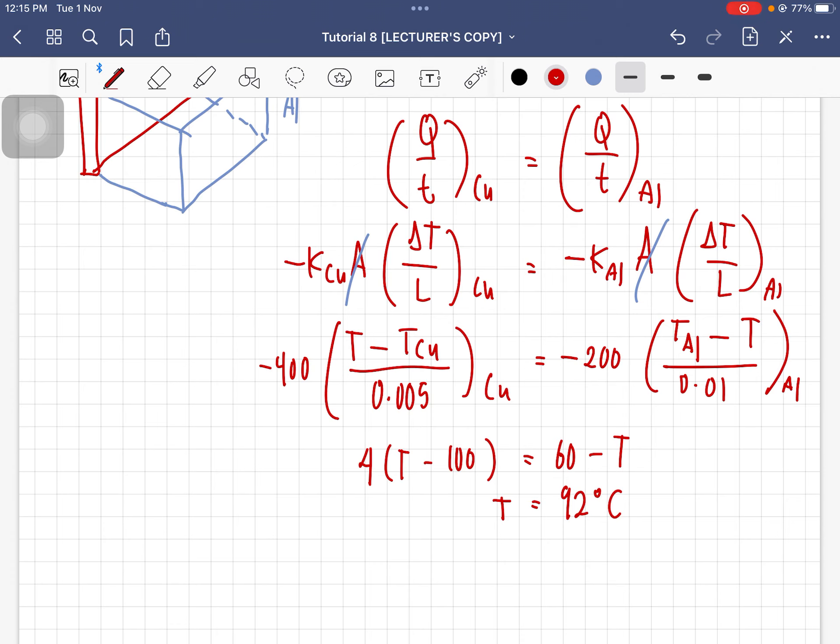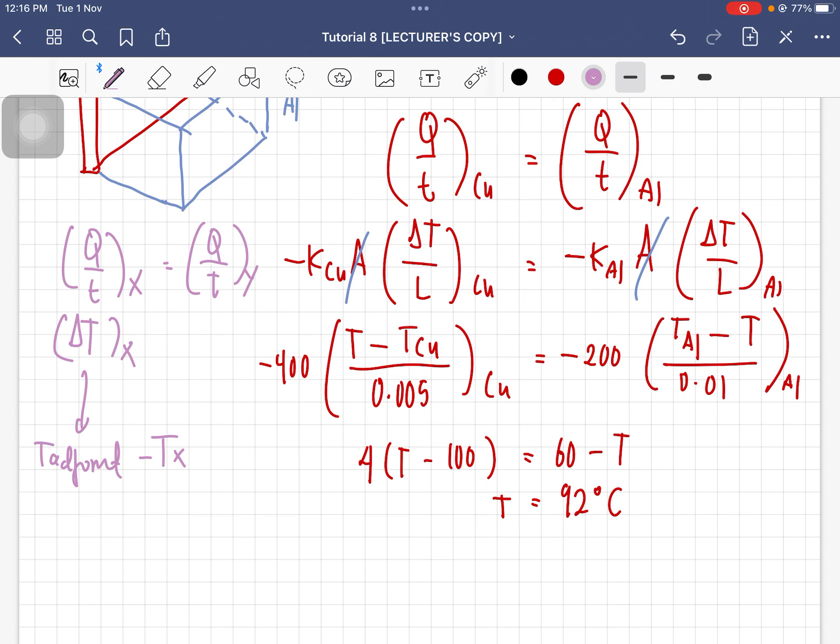I'm not sure if you have any problem with this calculation, but it should be quite straightforward because this is just applying the formula. But if you are confused on what is delta T, if you refer to our notes, I have written there that delta T for X material is the adjoined temperature minus the material X's temperature.